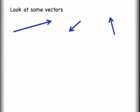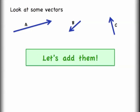Let's take a look at some vectors here. Remember a vector is defined by having a magnitude and a direction. I'm going to label these as vectors a, b, and c, and let's add them together.